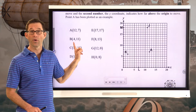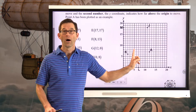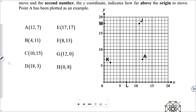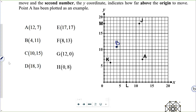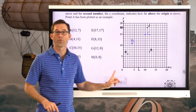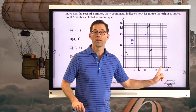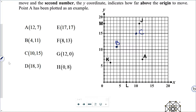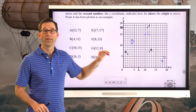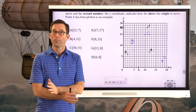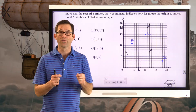If we look at letter B at 4 comma 11, I'm going to go 4 units to the right and 11 units up, and I'm right here. For 10 comma 15, I go 10 units to the right and 15 units up — there's letter C. For 18 comma 3, I go all the way over to 18 and then just go up 3 units. It is amazingly important that you understand the first number tells you how far to the right to go and the second number tells you how far up to go. Flip-flopping those is an amazingly serious error as you go further in math.